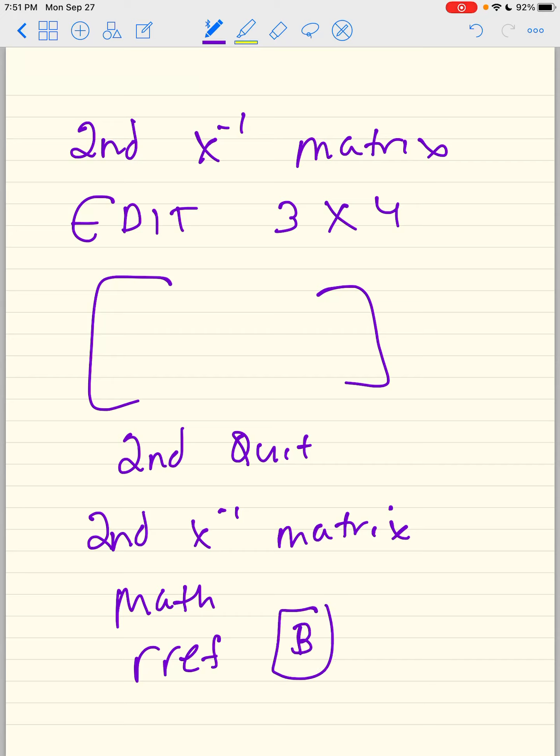And then once you do that, it's going to bring you to your home screen. And then you're going to press second, matrix again. And then once you do second matrix, you just click on bracket A, matrix A, or matrix A, matrix B, whichever one it's in.